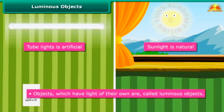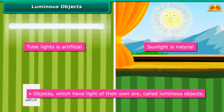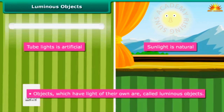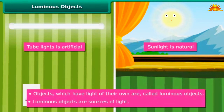Objects which have light of their own are called luminous objects. In our example, both the sun and tube lights are luminous objects. The sun is a natural luminous object and tube lights are artificial, man-made luminous objects. Luminous objects are sources of light.